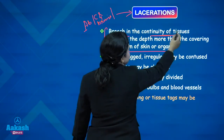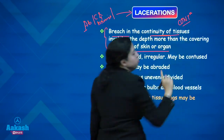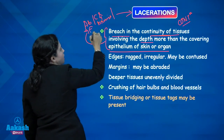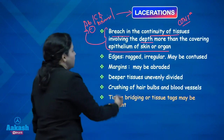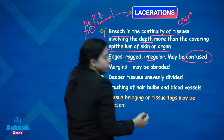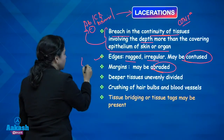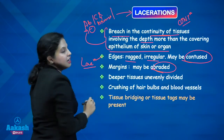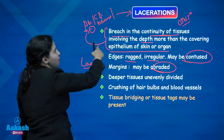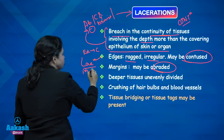Laceration is a breach in the continuity of tissues involving the depth more than the covering epithelium of the skin or organ. This is completely opposite to contusion — there was no breach in the continuity of tissue, and no depth involvement in abrasion beyond the covering epithelium. The edges of a lacerated wound will be ragged, irregular, and may be contused. The margins may be abraded. So basically, a laceration differs from abrasion and contusion, but the edges of this lacerated wound show contusion and the margins show abrasion.